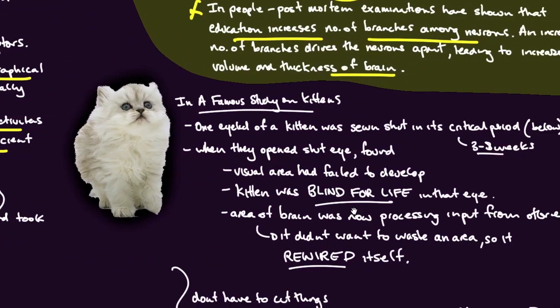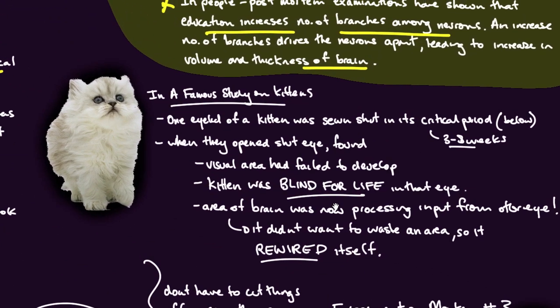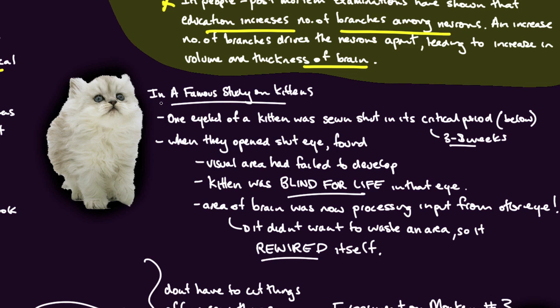I'm going to do something dastardly to a very cute animal. In a famous study on kittens, one eyelid of a kitten was sewn shut in its critical period, between three and eight weeks. I'll add an eye patch, a little bit more humane. When they opened the shut eye after that period, they found a few things. The visual area had failed to develop - that's kind of expected.